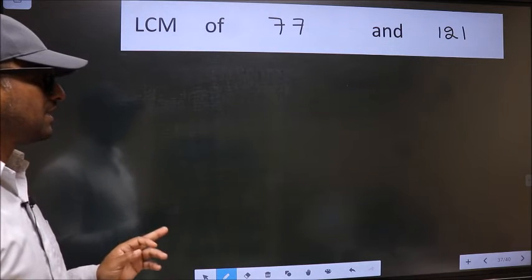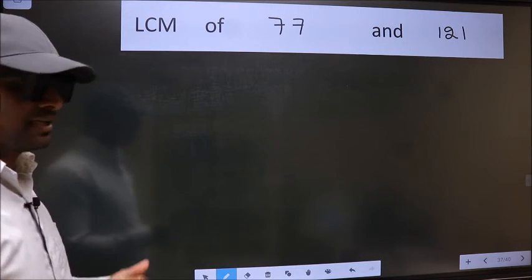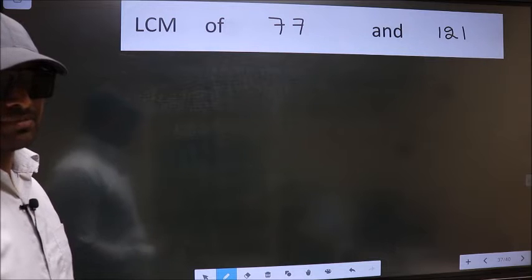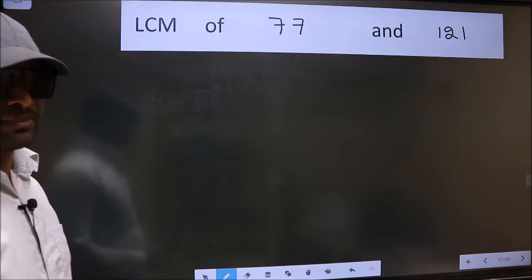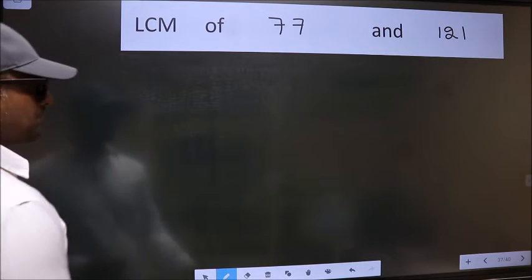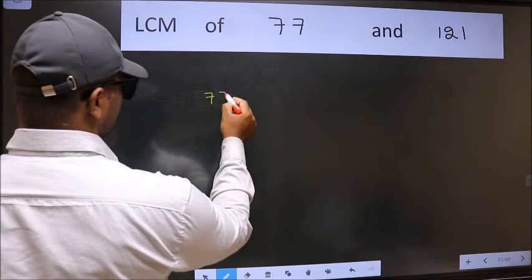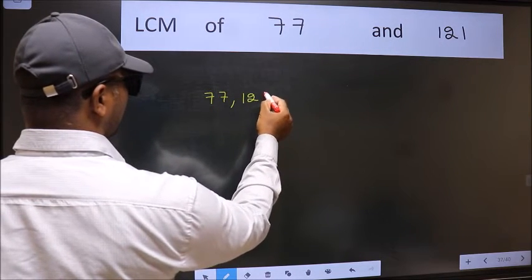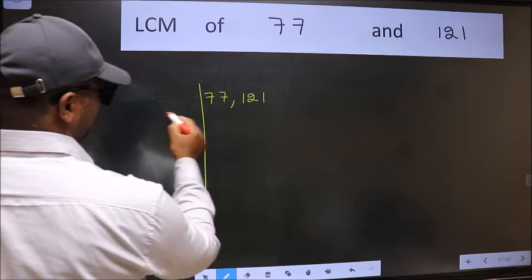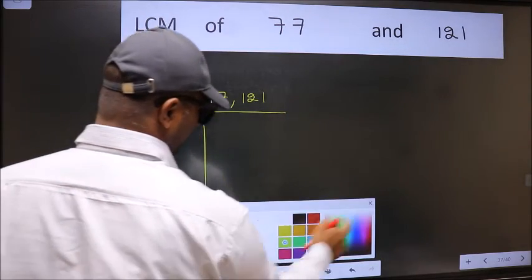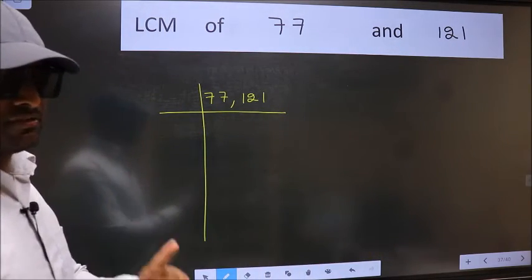LCM of 77 and 121. To find the LCM, we should frame it in this way. 77, 121. This is your step 1.